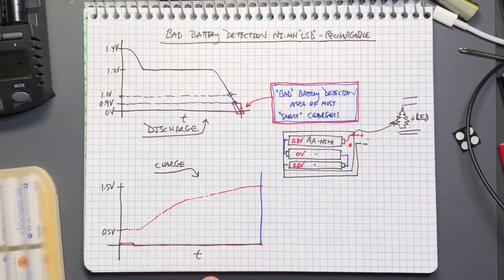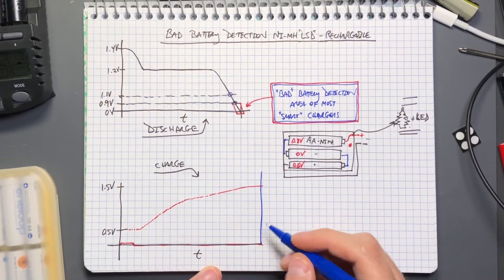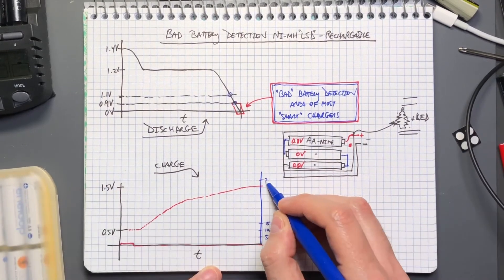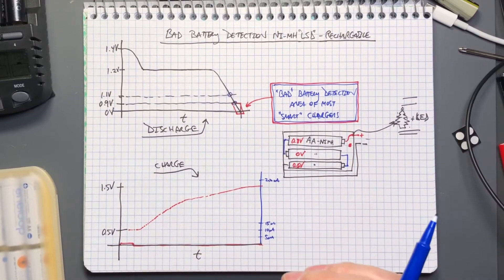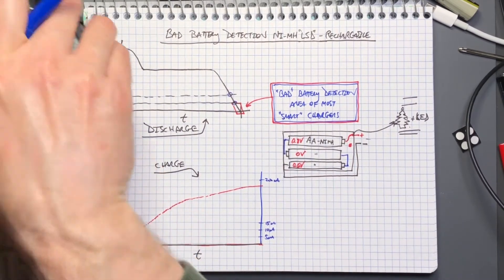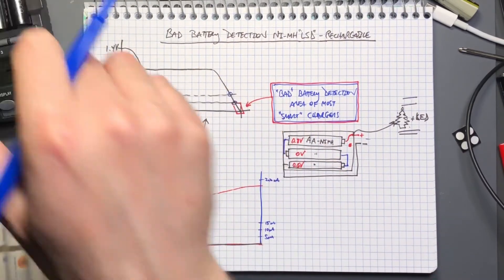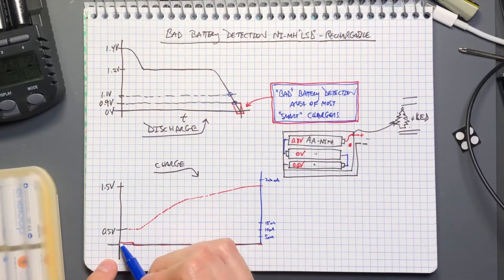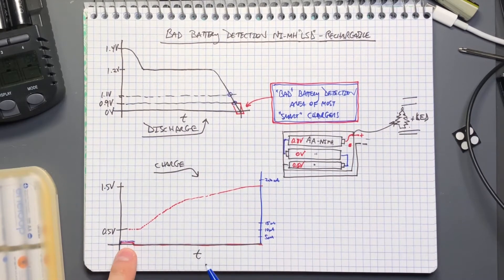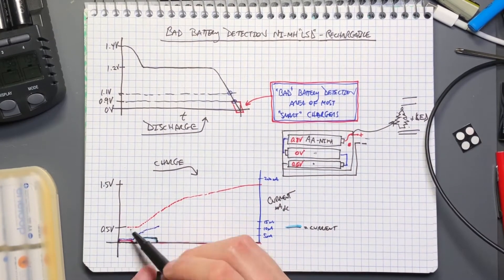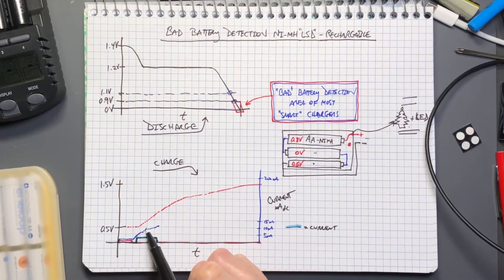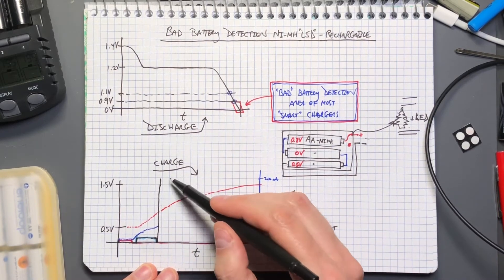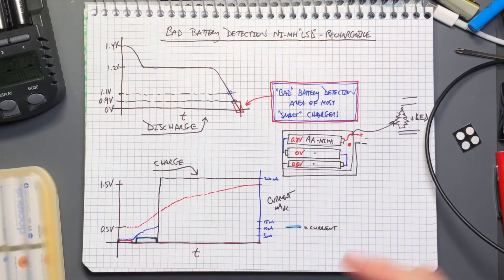Some other chargers will attempt more intelligent things, similar to what happens in lithium ion charge controllers. When a lithium ion battery is at zero volts, it will apply a small amount of current. The charger applies a little bit of current to the cell. If the voltage starts to rise and goes above the 0.5 volt threshold, it will come all the way up to its set charge current and start to charge the battery.